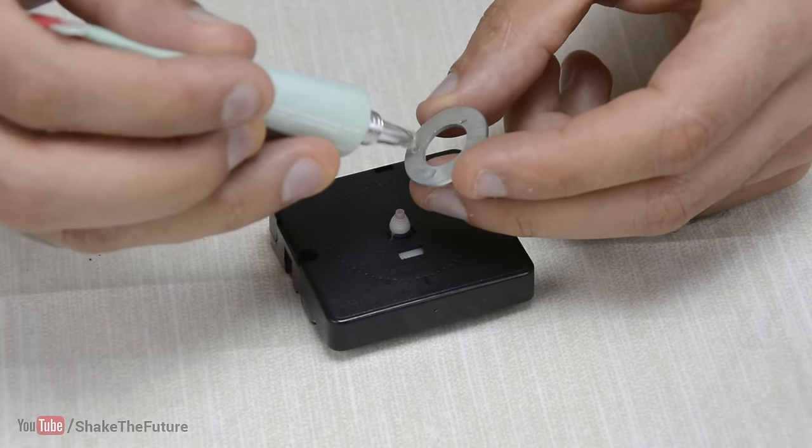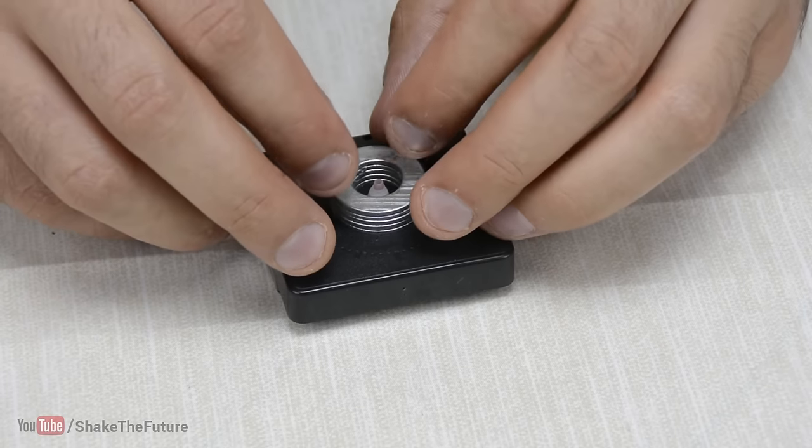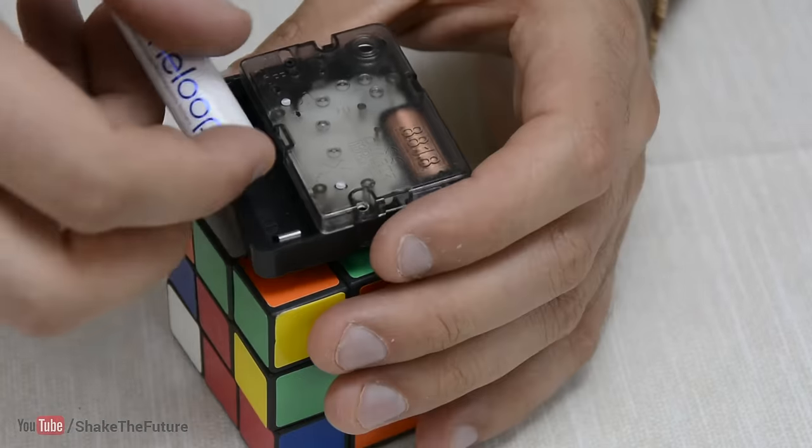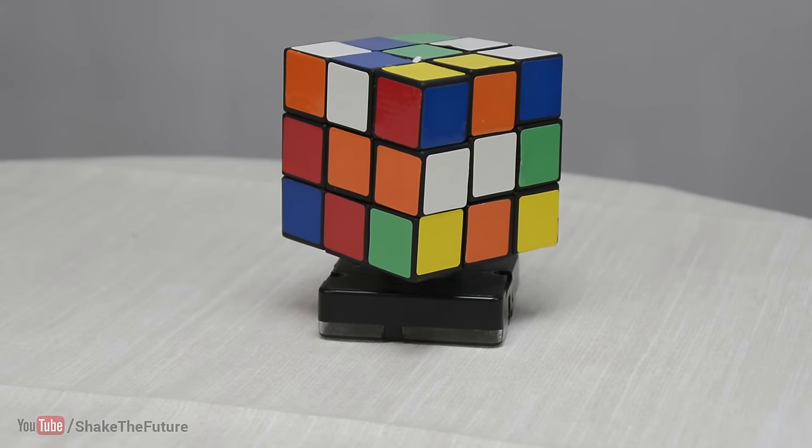I glued some washers to the core to support the Rubik's cube. Then I put the cube on top of the core and inserted the battery. Our turning Rubik's cube is ready.